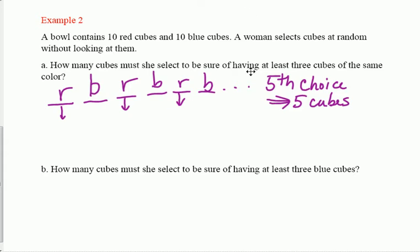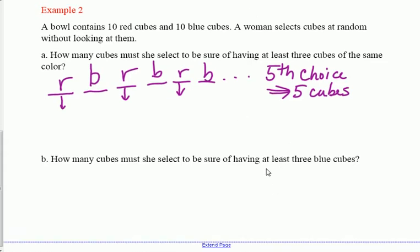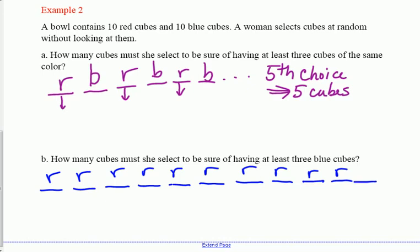That implies that she must select five cubes before she's guaranteed to have at least three of the same color. Probably she picked out three of the same color before five cubes, but we can't know. This is the worst-case scenario. We want to be sure of having at least three, and this is the minimum number, the maximum number she'd have to pick out to get three of the same color.